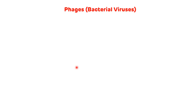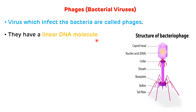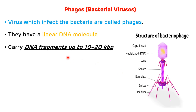Now we will see bacteriophages, which are also known as bacterial viruses. Viruses which infect bacteria are called phages. They have a linear DNA molecule. As shown in the image, you can see they have a linear DNA molecule. Apart from DNA, they contain a capsid head, collar, sheath, spikes, and tail fiber. They can transfer or carry around 10 to 20 kilobase pairs of DNA fragments.